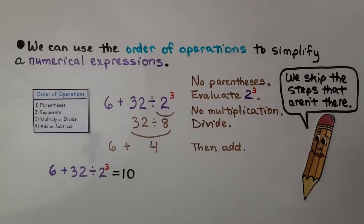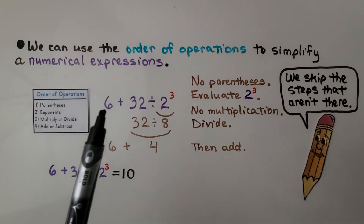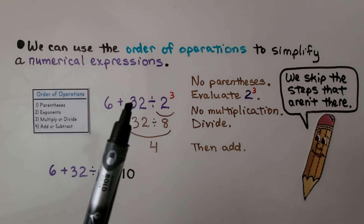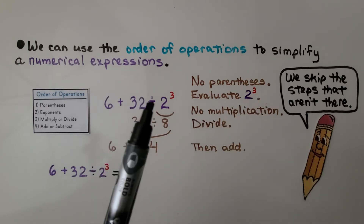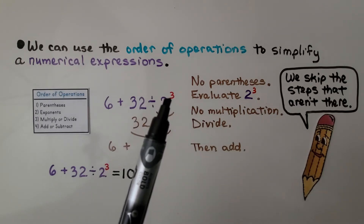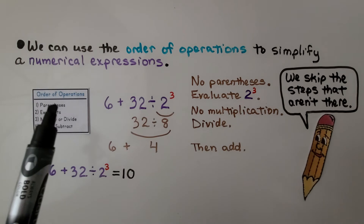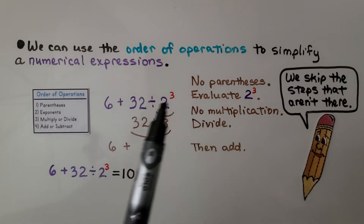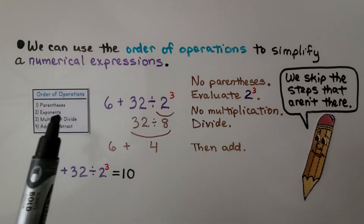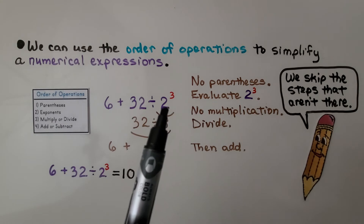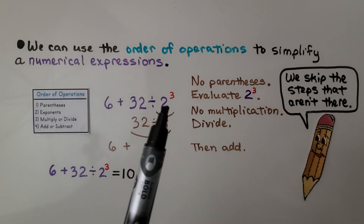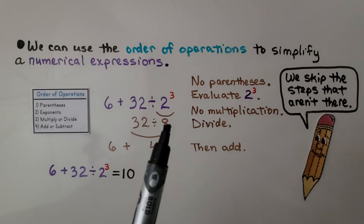We can use the order of operations to simplify a numerical expression. We have 6 plus 32 divided by 2 raised to the third power. We're supposed to do parentheses first, but there are no parentheses, so we skip to the exponents. We evaluate 2 raised to the third power: that's 2 times 2 times 2, which equals 8.